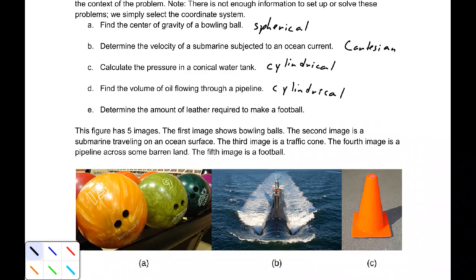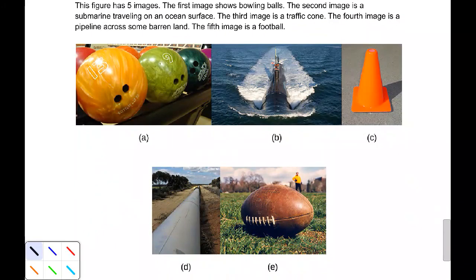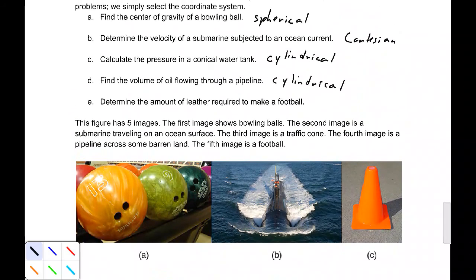Part E, determine the amount of leather required to make a football. I'm going to scroll down to the fifth image here. That's the football. And they are this shape. There's some rotational symmetry about them. That's important. So let's see, we have some sort of rotation. I can tell you one of the axes is going to be going directly through the axis of the ball. The origin could be the center of the ball or even one of the ends. And because we only have rotational symmetry about one axis, we probably want to go with cylindrical as well for this one.